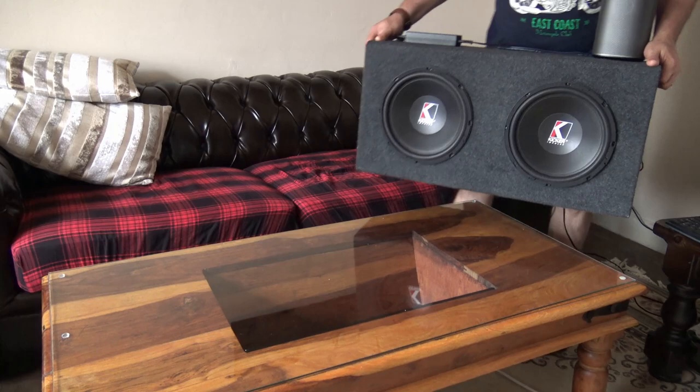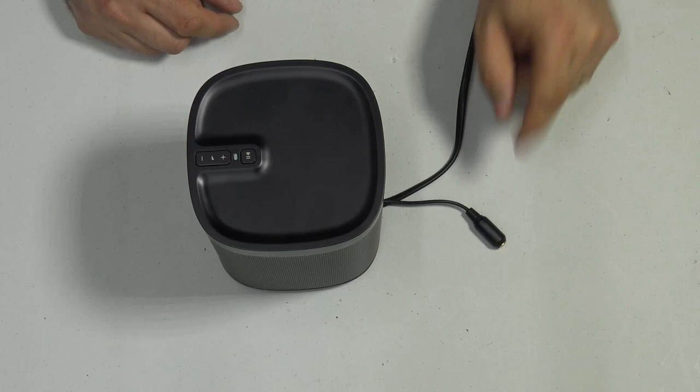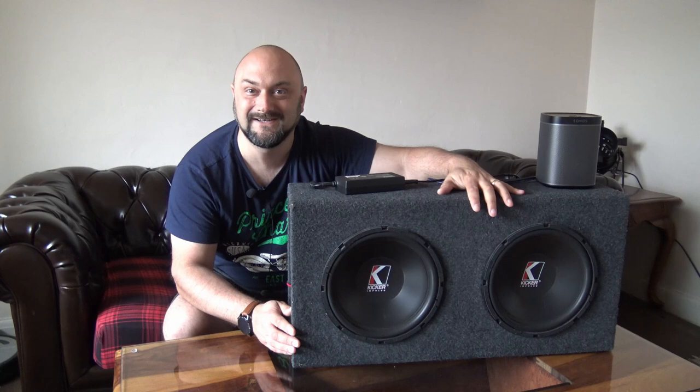The Sonos bass system, the sub, is really expensive—about 700 pounds or dollars. So what I've done is drilled a hole in this Sonos, put a little cable out the back of it, and wired it up to this lovely sub bass system here which sits right next to the sofa and scares the hell out of me and the wife.